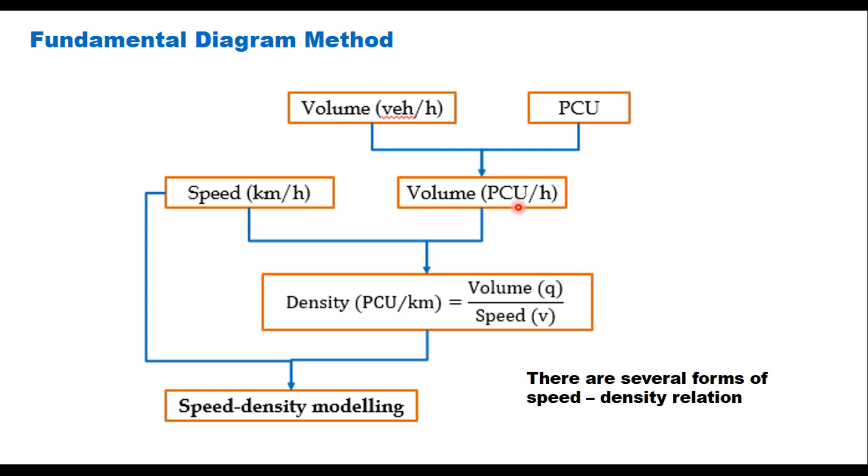Then for each 5 minute interval you have speed data and using this speed data and volume data you calculate the density or if possible you directly draw speed volume diagram and then you find out the capacity.